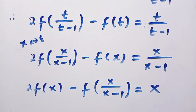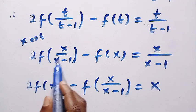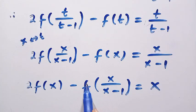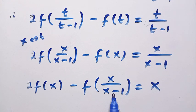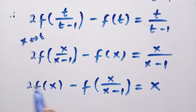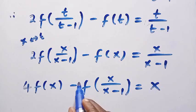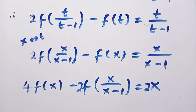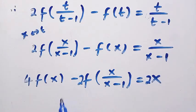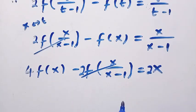Looking at this system, we need to get f of x. We have 2 multiplied by f of x over x minus 1 in one equation, and minus f of x divided by x minus 1 in the other. To cancel these terms out, we multiply the second equation by 2. This gives coefficients of 4 and 2 on the respective terms. Adding the two equations together, the f of x over x minus 1 terms cancel, leaving 4f of x minus f of x.